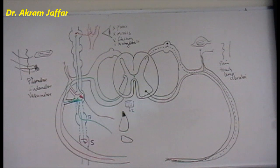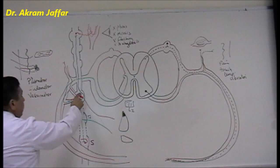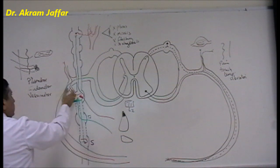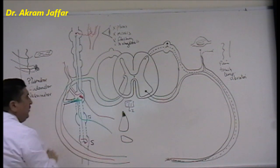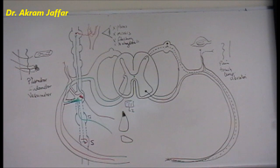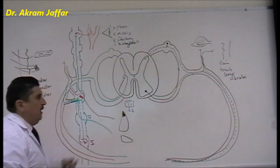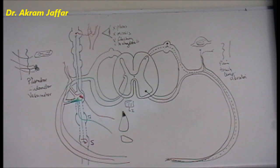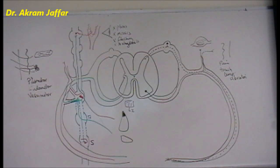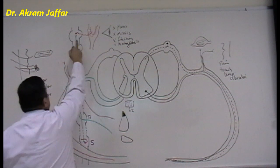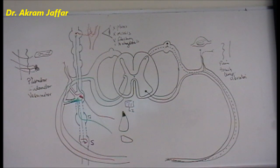To summarize the three options of the postganglionic fibers: first, they leave the sympathetic trunk and accompany branches of the spinal nerve to be distributed to the skin; second, they leave and form plexuses close to the viscera of the thorax, such as the esophageal plexus, pulmonary plexus, and cardiac plexus; third, they leave and accompany blood vessels to be distributed to the head.